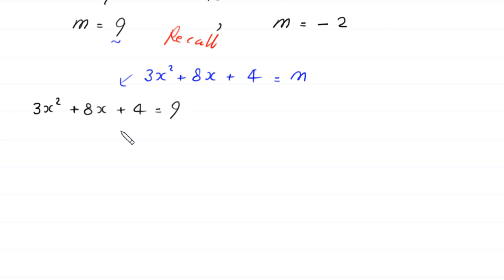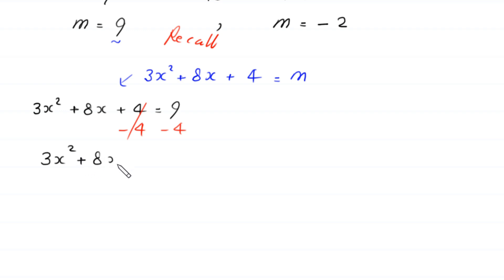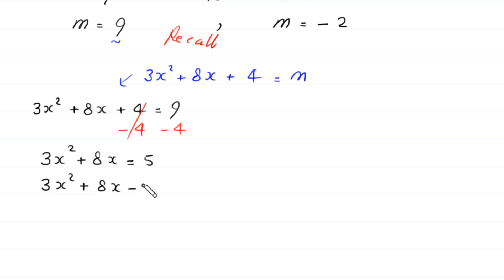We subtract 4 from both sides, so the 4 gets cancelled and we are left with 3x squared plus 8x is equal to 5. Moving 5 to the left hand side gives 3x squared plus 8x minus 5 is equal to 0.